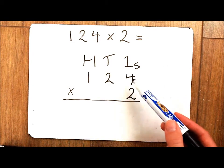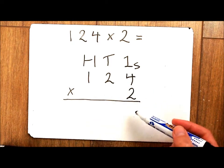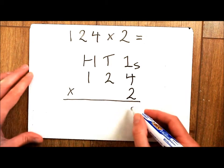So first thing to do is I am going to multiply my ones together. So 4 lots of 2 or 2 lots of 4 is 8.